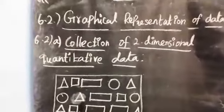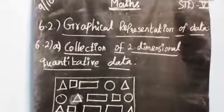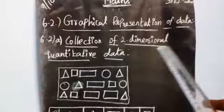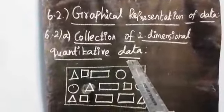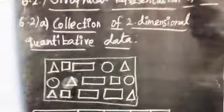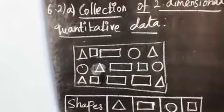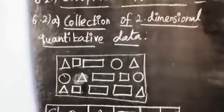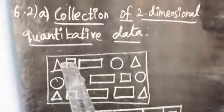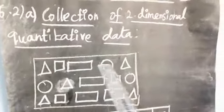The first type is collection of two-dimensional quantity data. This is an easy method to collect and represent two-dimensional information using pictures. Look at the pictures — triangle, square, rectangle, circle — four shapes are given in the pictures.